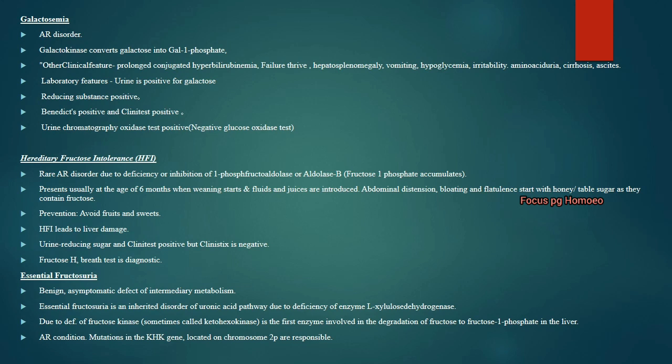Essential fructosuria is a benign, asymptomatic defect of intermediary metabolism. It is an inherited disorder of the uronic acid pathway due to deficiency of fructokinase (ketohexokinase). The enzyme involved is in degradation of fructose-1-phosphate in the liver. It is autosomal recessive with a mutation in the KHK (ketohexokinase) gene located on chromosome 2p.